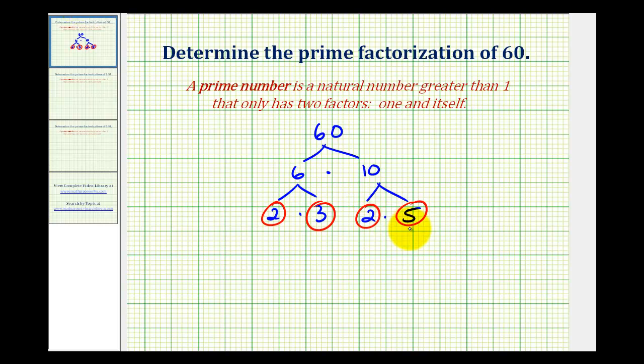There are two ways to express this. We can write it in expanded form, and we can also write it using exponents. In expanded form, the prime factorization of 60 would be 2 times 2 times 3 times 5. Notice how we do want to put the prime factors in order from least to greatest.